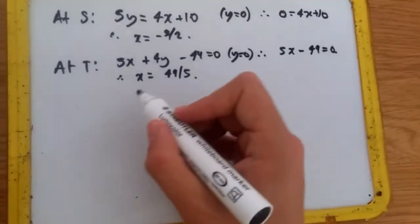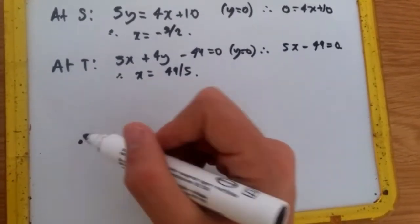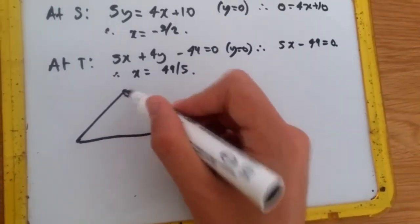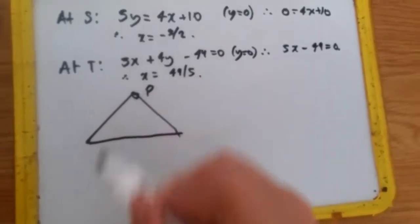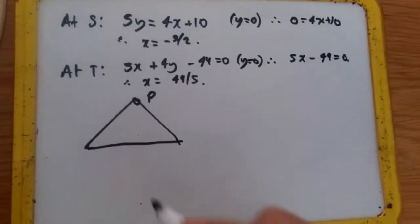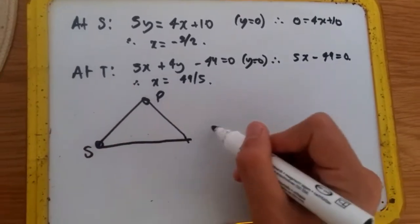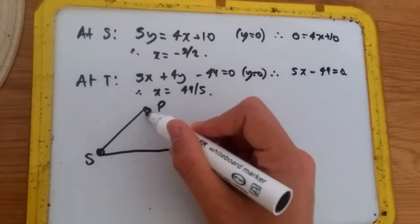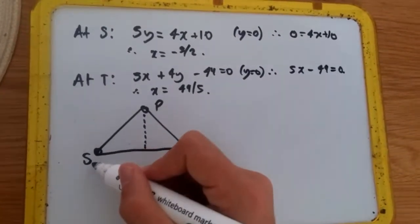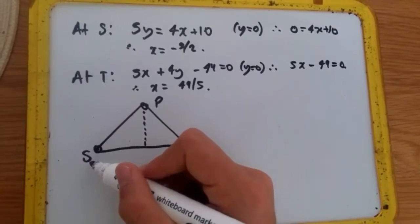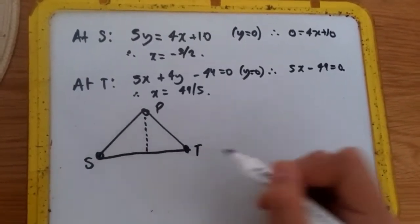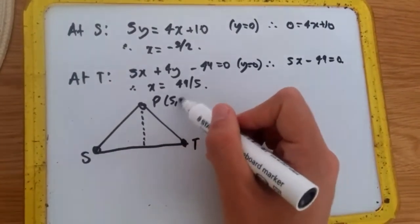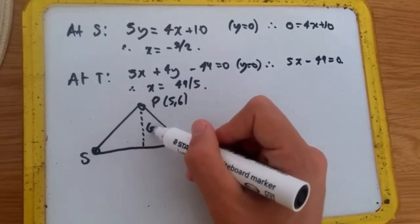Not difficult guys. So now all we do is just sketch our triangle. It doesn't have to be the best triangle ever. So we know that this is the coordinate P. Here we have S. We also have T. The vertical height from P to the base. Remember this has coordinate -5/2, 0 and 49/5, 0. So this is lying on the x-axis. And this is 5, 6. Because we know it's 5, 6, we know that it goes as high as 6. So the height is 6.